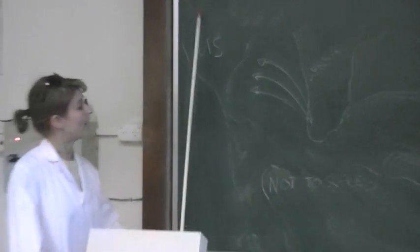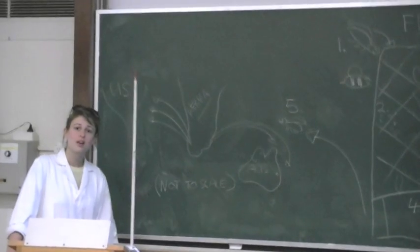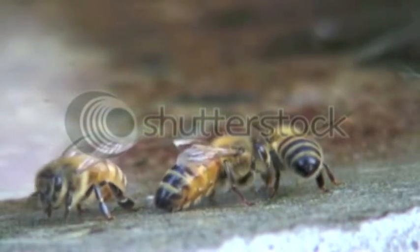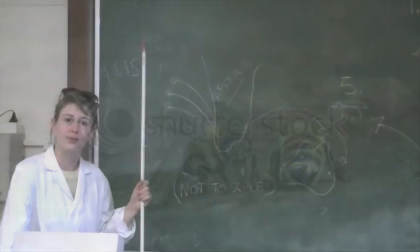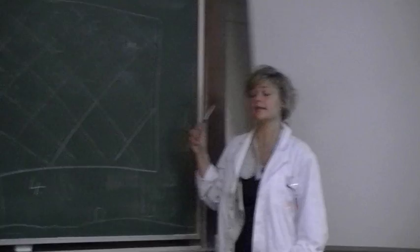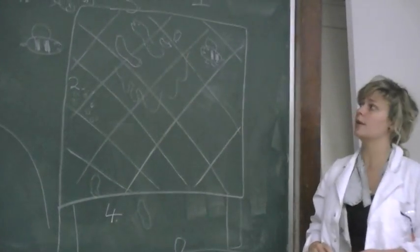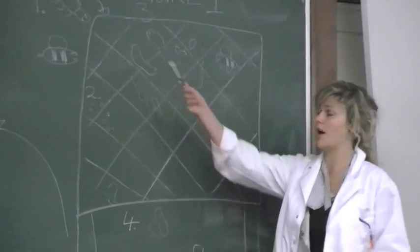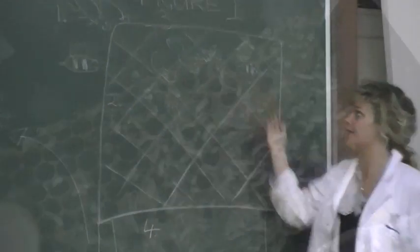In countries such as the US and Australia, however, the European honeybees have not developed such defence mechanisms, and therefore are not able to as effectively combat the hive beetle. Figure 1 demonstrates the life cycle of the small hive beetle, and also represents the symbiotic relationship between the parasite, the small hive beetle, and the host, the European honeybee's hive.